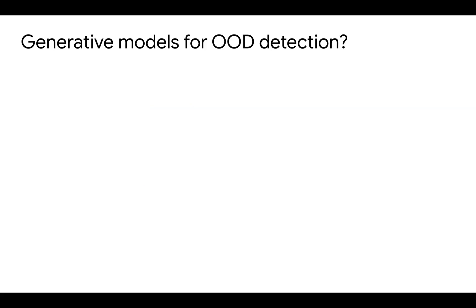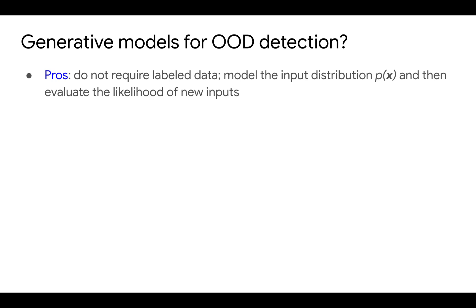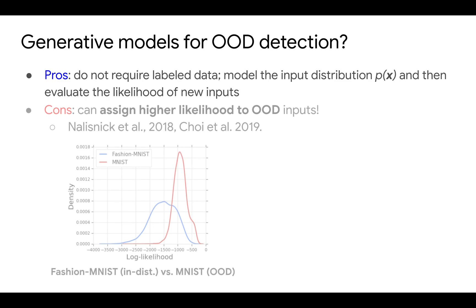One popular strategy is to use a generative model to model the input distribution and evaluate the likelihood of new inputs. However, it has been observed that the generative model can assign even higher likelihood to OOD inputs.